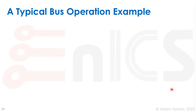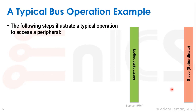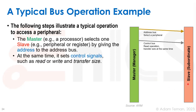In a typical bus operation, the master — such as a processor — selects the slave by putting the address on the address bus. Either the slave has a comparator that checks if the address matches its own, or a decoder sends a chip-enable select signal to the appropriate slave. Simultaneously, the master sets control signals such as read enable or write enable, indicating the operation type and transfer size.